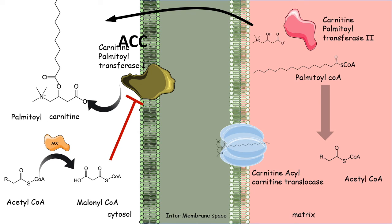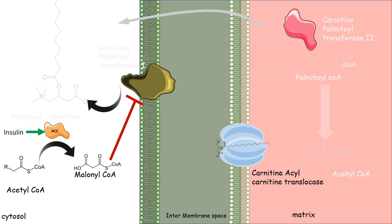CPT1 is inhibited by malonyl-CoA. Malonyl-CoA is produced from acetyl-CoA by the enzyme acetyl-CoA carboxylase, which carboxylates acetyl-CoA to form malonyl-CoA. Insulin triggers the activity of acetyl-CoA carboxylase, and insulin is only present in the fed state, not the fasted state. Therefore, in the fed state, insulin activates acetyl-CoA carboxylase, acetyl-CoA is converted to malonyl-CoA, which both inhibits CPT1 and is channeled into the fatty acid biosynthesis pathway.